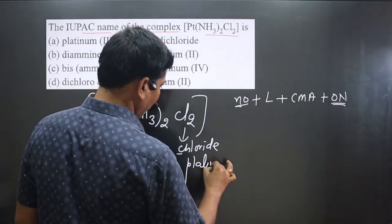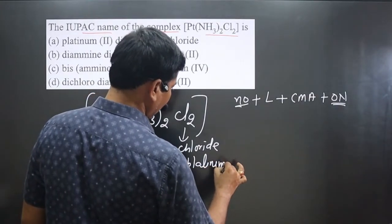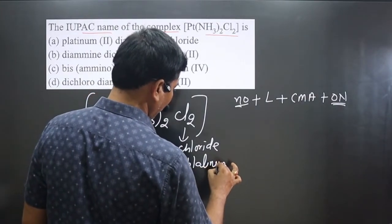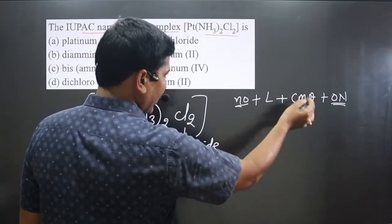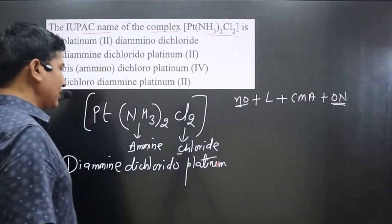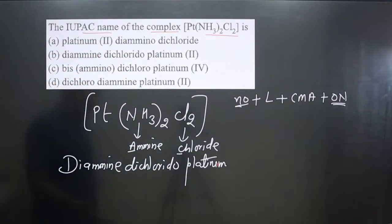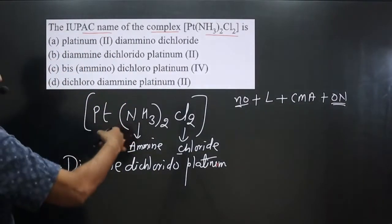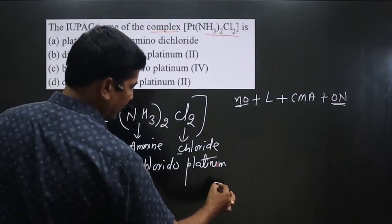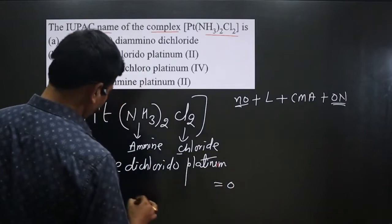Next, we write the central metal atom, which is platinum. So we add 'platinum' after the ligands.